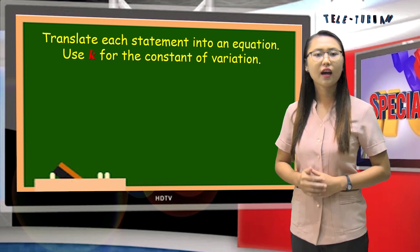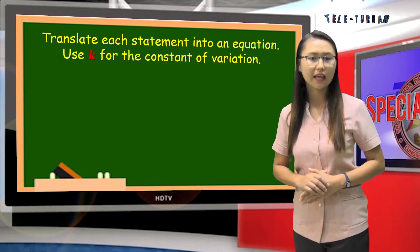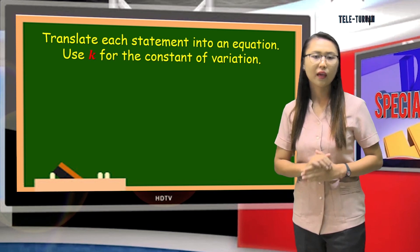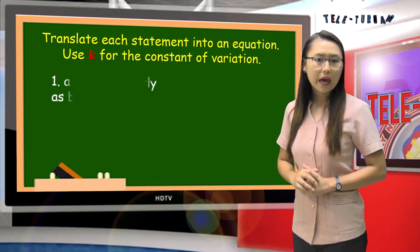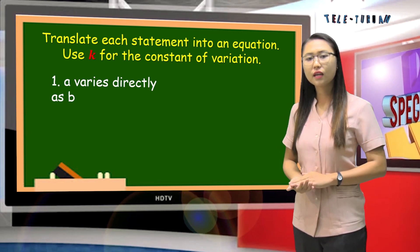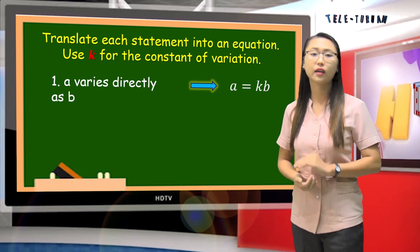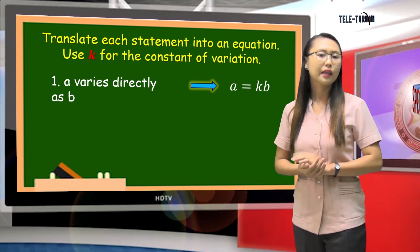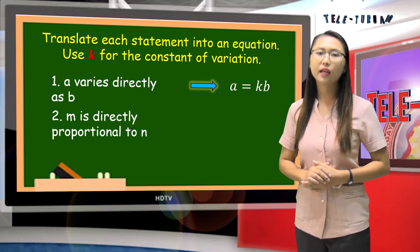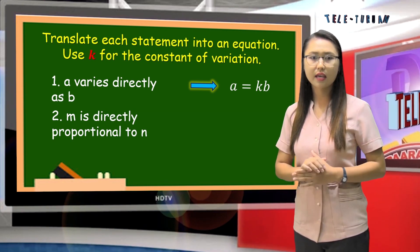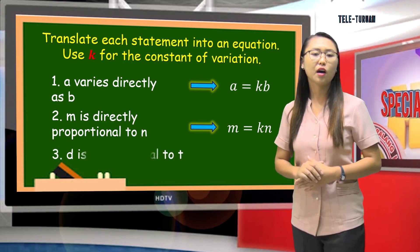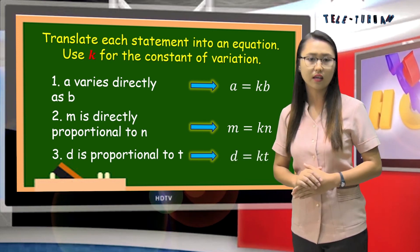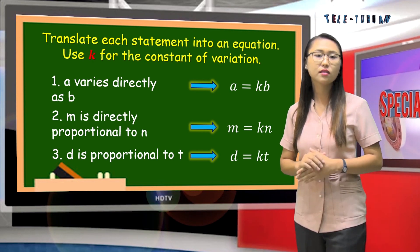Now let us study how to translate the given statement into an equation. Let us use k for the constant of variation. For example: 'a varies directly as b' translates to a is equal to kb. The variable that will be isolated is the one that is read first. Number two, 'm is directly proportional to n' may be translated as m is equal to kn. And number three, 'd is proportional to t' may be translated as d is equal to kt. That is how to translate a variation statement into an equation.